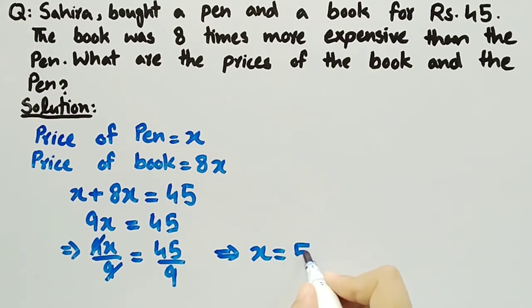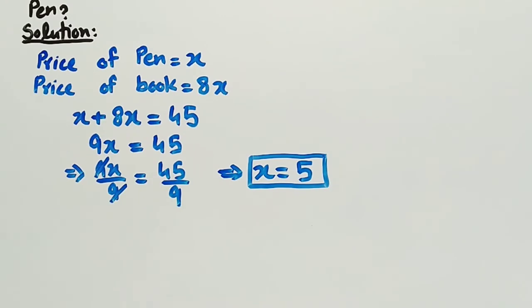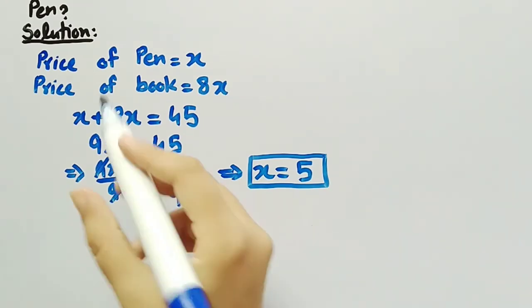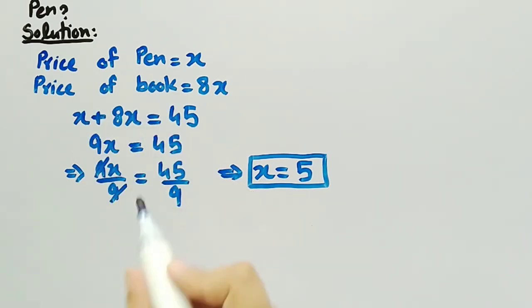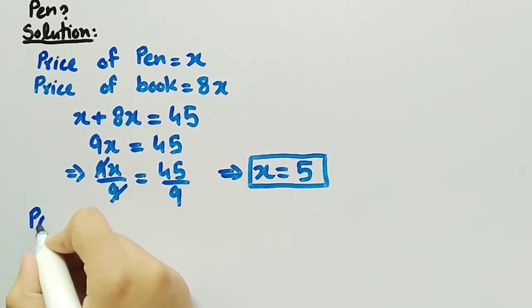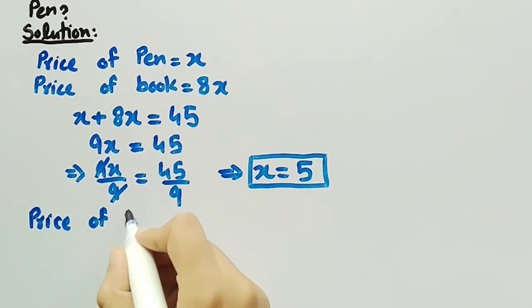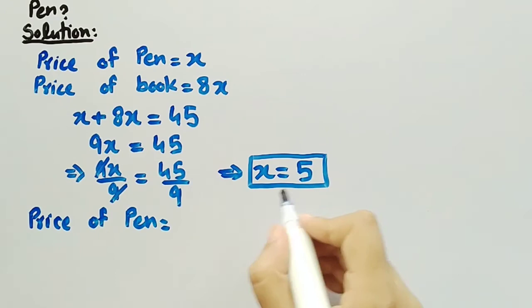So we have got x equal to 5. Now by substituting the value of x in these two equations, we will find the price of pen and book. Since price of pen is equal to x and we have found x equal to 5.